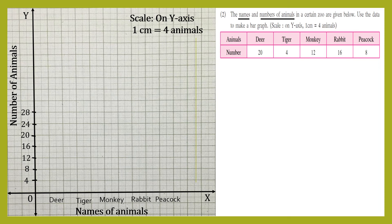Now let's start drawing rectangles. The number of deer are 20, so we draw the first vertical line till 20, then a second vertical line till 20, and join them with a horizontal line. Let's check the height — it's 20, as per the given data.